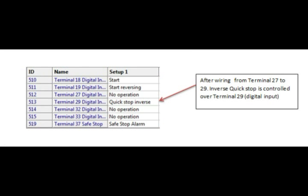Here you can see how I have programmed the digital inputs. As you can see, terminal 18 is used as start. This means start forward. Terminal 19 is used as start reverse. And then terminal 29 is used as quick stop reverse. And this is where the digital output comes in, because I need to make a jumper from terminal 27 to terminal 29 to make a quick stop.